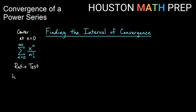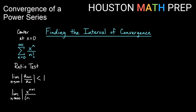Using the absolute value version of the ratio test, we take the limit as n approaches infinity of the absolute value of the (n plus 1) term over the nth term, and we want that less than 1. That gives us the limit as n approaches infinity of the absolute value of [x to the (n plus 1) over (n plus 1) factorial] times [n factorial over x to the n], and we want that less than 1.